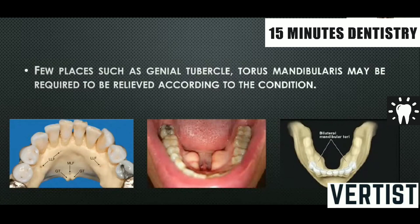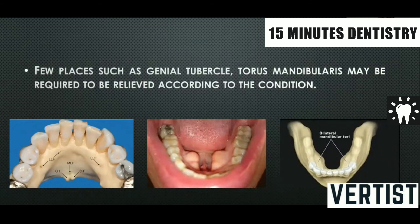These are the relieving structures. Once we know the important structures — what is normal, what is abnormal, what should be the extension, and which areas are significant — we are prepared for the fabrication of a complete denture.